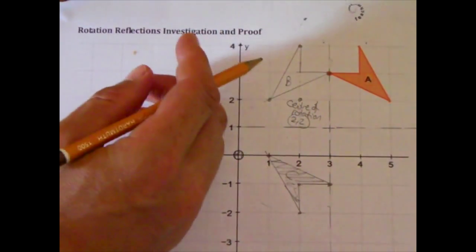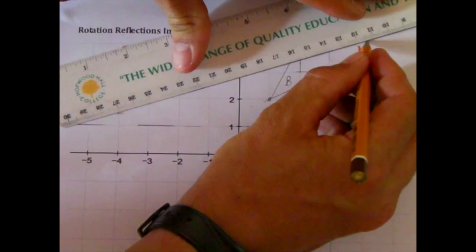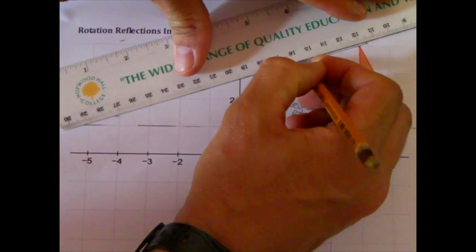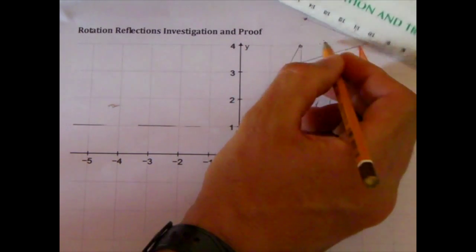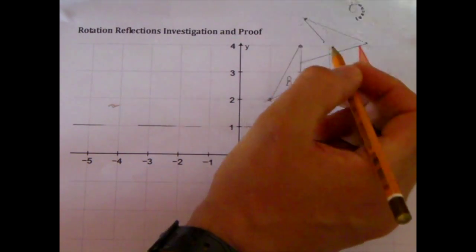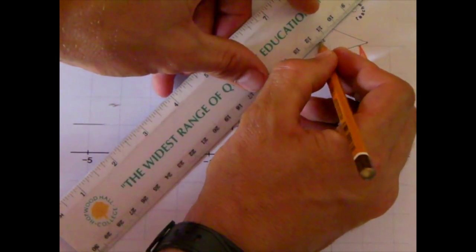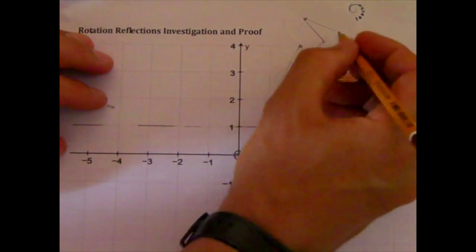Mark the points, going to join up those dots, and let's call this shape D.